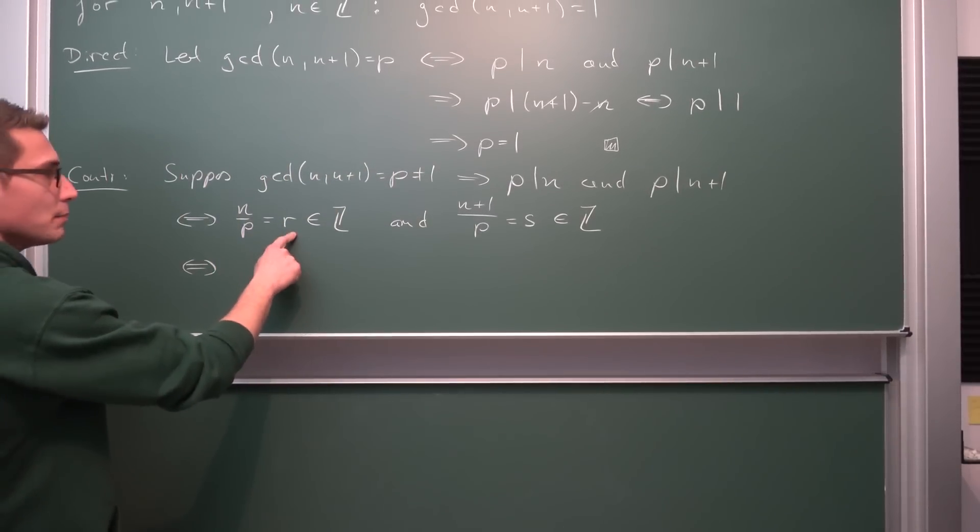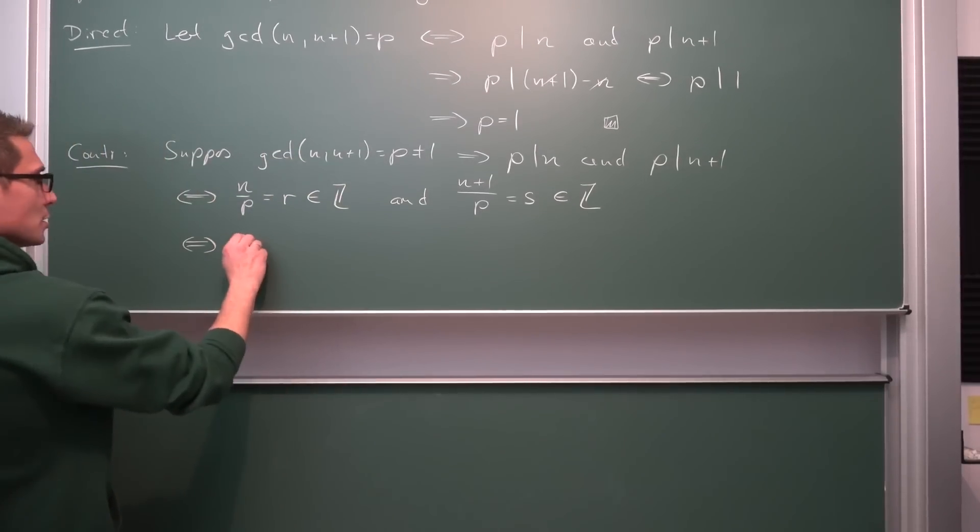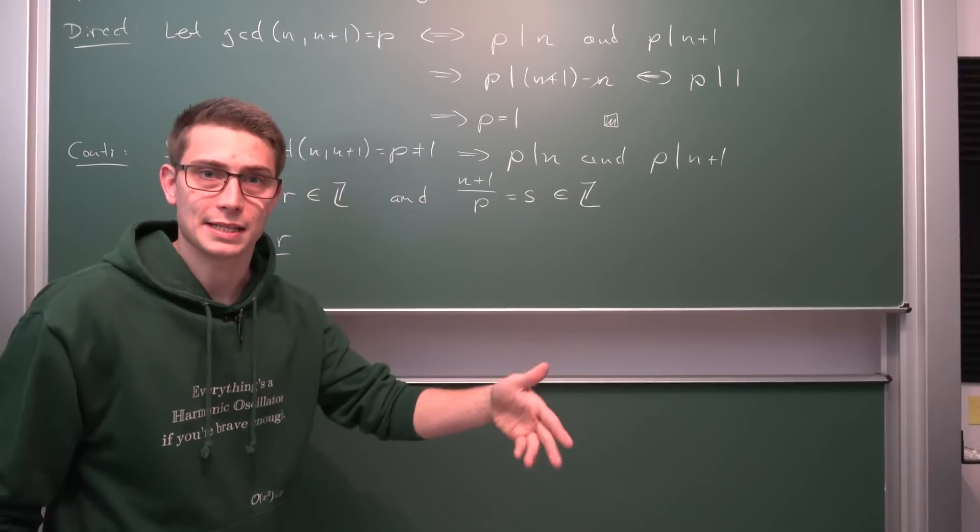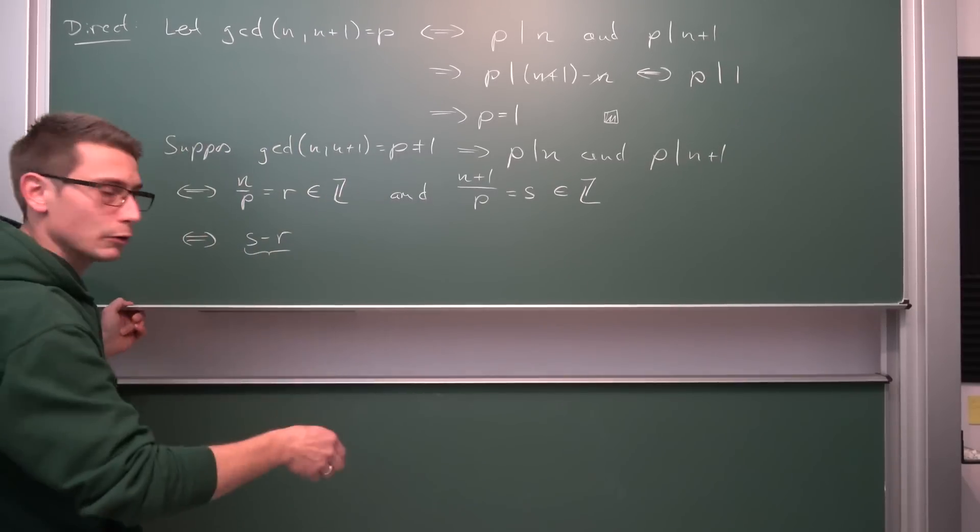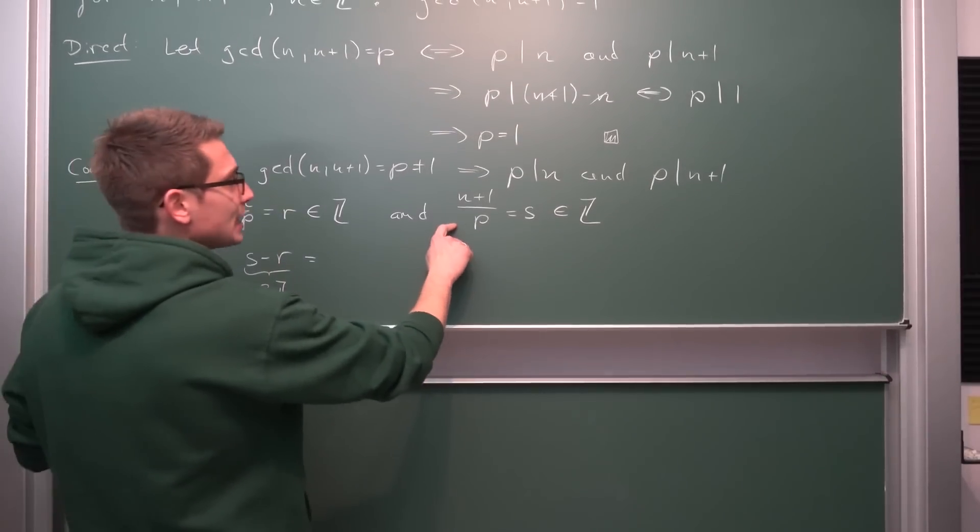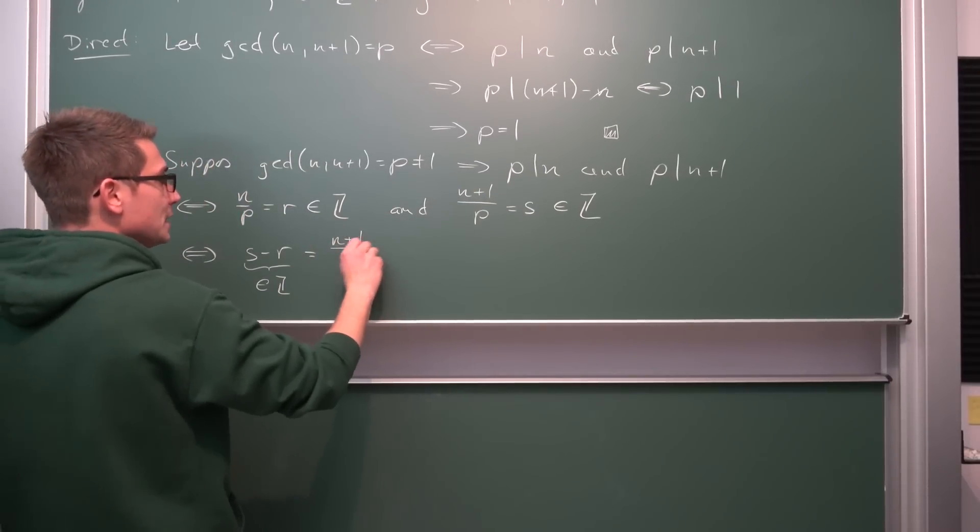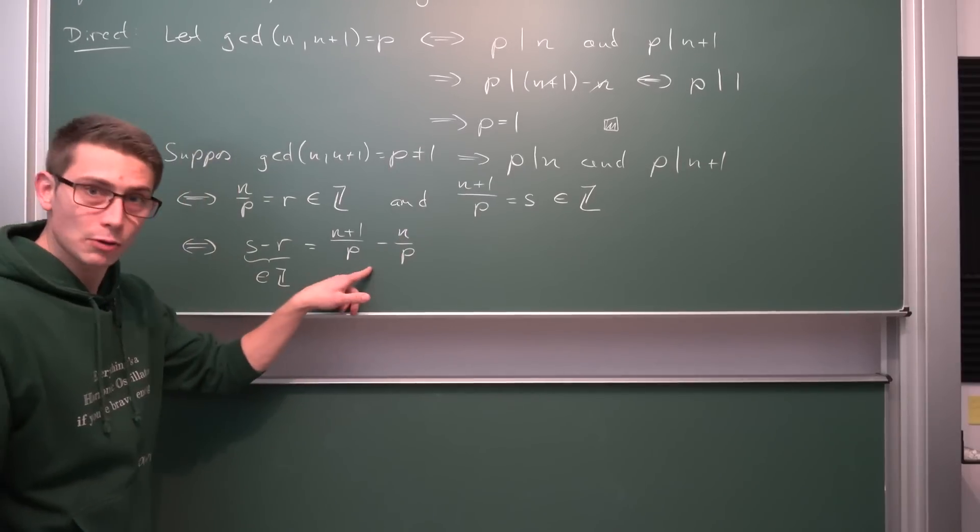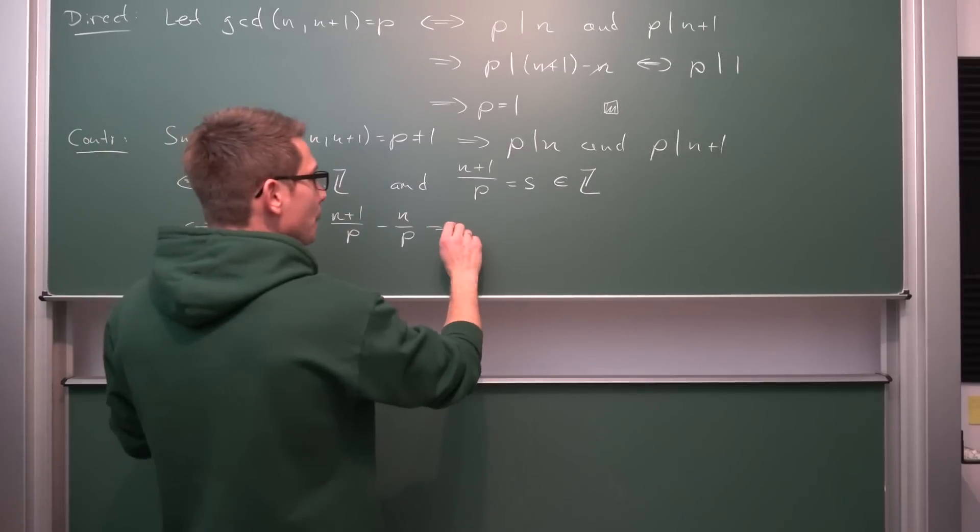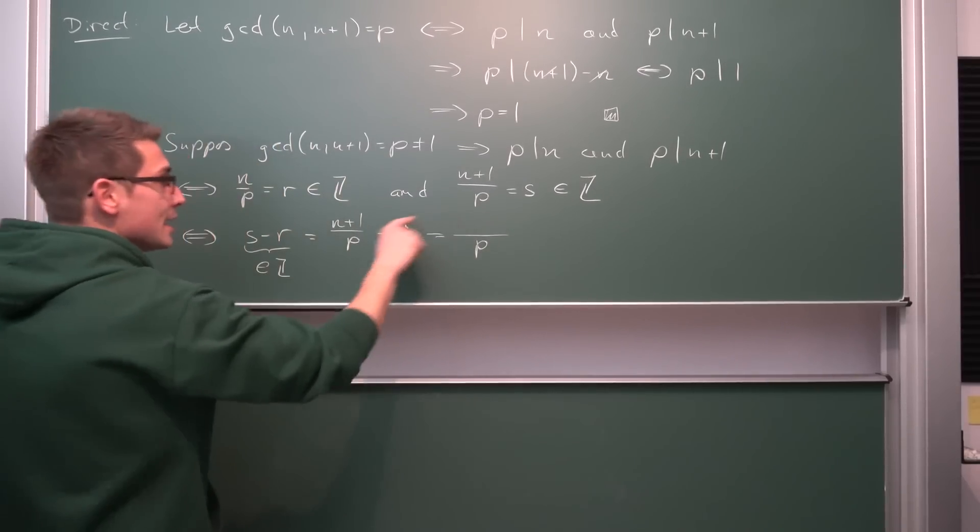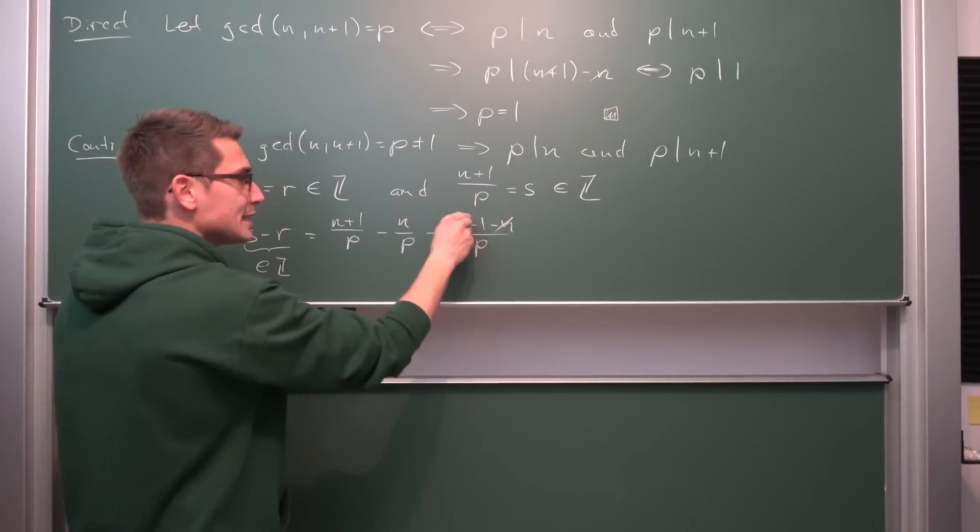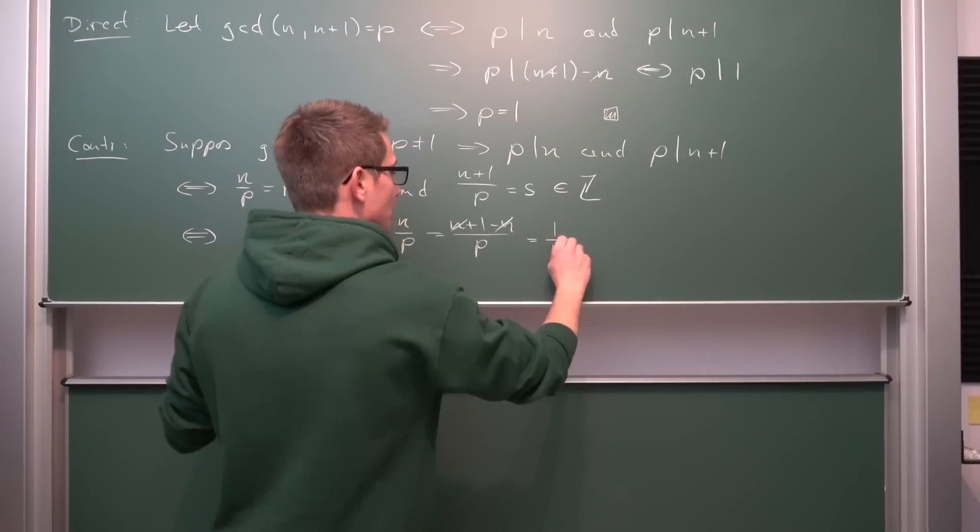Now, the cool thing about integers is that they are closed under addition and also the inverse operation subtraction. Meaning what we can do is we can take our two numbers r and s and subtract them from one another. So s minus r, since they are closed under addition, for example, 5 minus 7 is going to be negative 2, which is once again in our positive and negative integers. So this right here is element of the positive and negative integers. This is also equal to saying we have n plus 1 divided by p minus n divided by p. And we know how subtracting or adding fractions works. We have the same common denominator here, meaning we can put everything into the numerator. Now we got n plus 1 minus n in the numerator. Well, n and negative n are going to cancel out, leaving us with 1 divided by p.